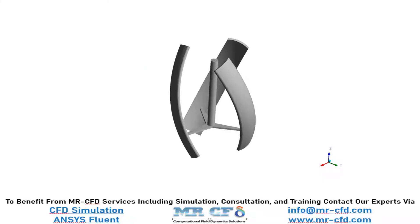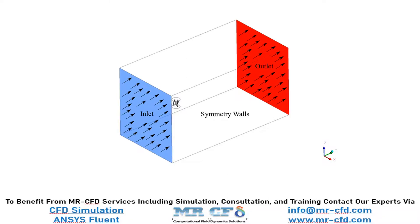As depicted in this slide, our geometry of interest is shown in this figure. To simulate the airflow adjacent to this geometry, we're going to create two zones: a rotary zone and a static zone. We place our wind turbine inside the rotary zone to inflict the blade's rotation inside our computational domain. The computational domain consists of various boundary conditions such as inlet, outlet, blade walls, and symmetry walls covering the bigger static rectangular domain.